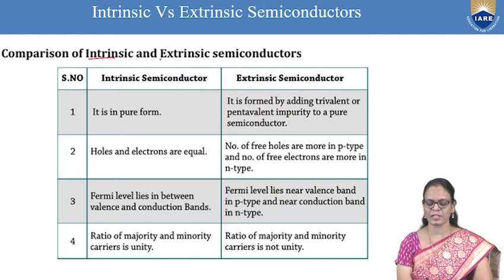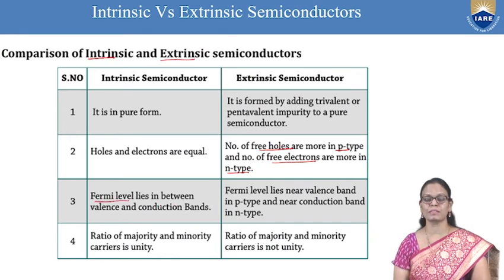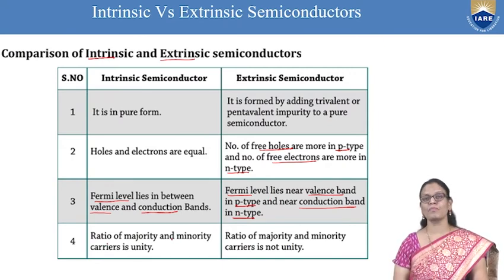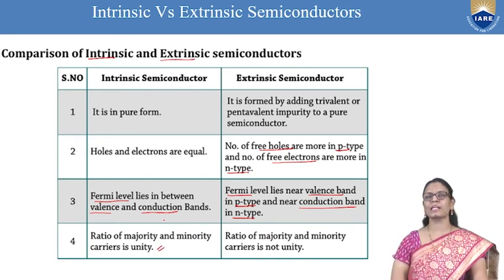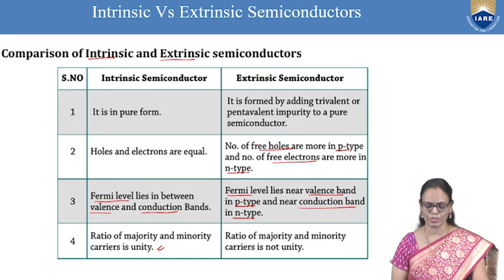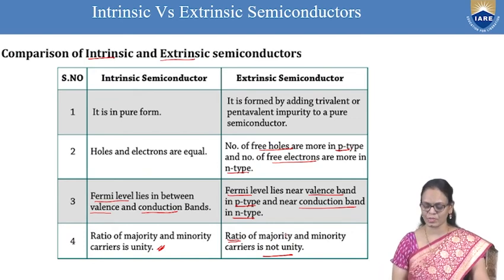Comparing intrinsic and extrinsic semiconductors: intrinsic is pure; extrinsic is impure. In intrinsic semiconductors, holes and electrons are equal, so the ratio of majority to minority carriers is unity. In extrinsic, if it is P-type, holes are more; if N-type, electrons are more — the ratio is not unity. In intrinsic semiconductors the Fermi level lies exactly between the valence band and conduction band, but in extrinsic it lies near the valence band for P-type and near the conduction band for N-type.